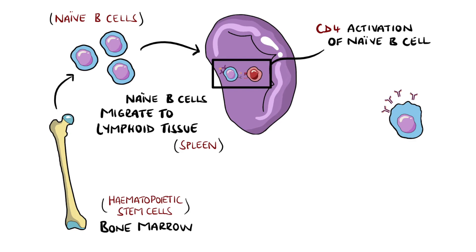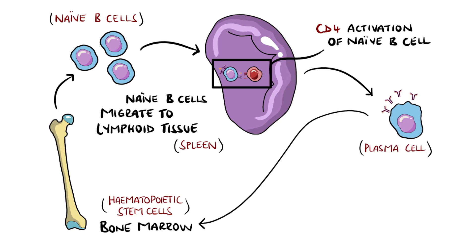This causes them to develop into plasmablasts and eventually plasma cells that reside in the bone marrow and produce large quantities of antibodies.